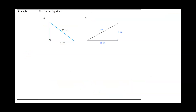In this next example, we want to find the missing side. I'll label one leg a, the other leg b, and the hypotenuse c. Remember, the two sides that make up the right angle are the legs, and the side across from the right angle is the hypotenuse.